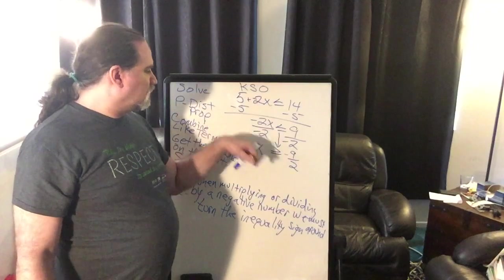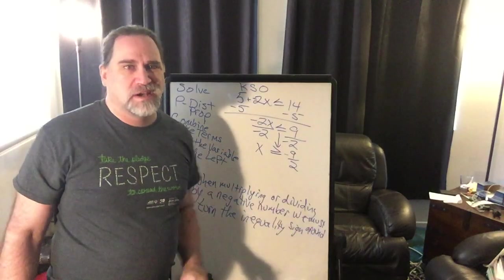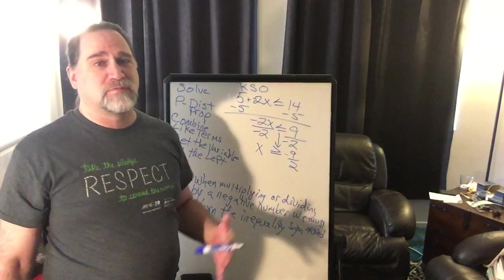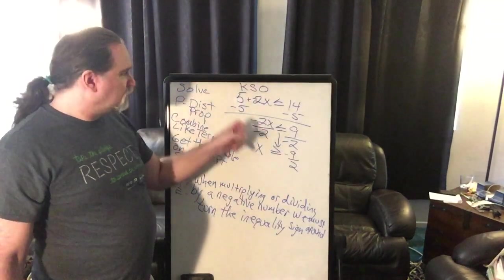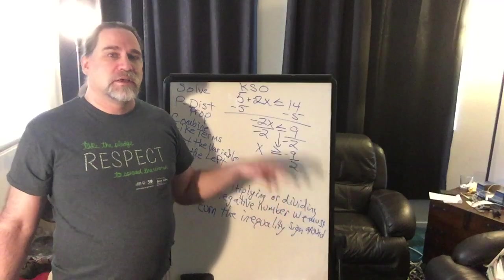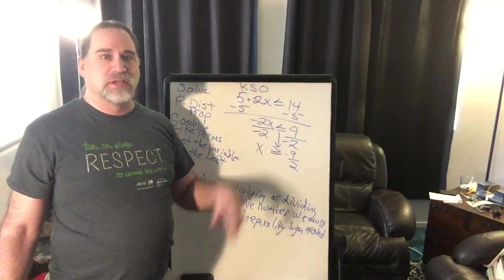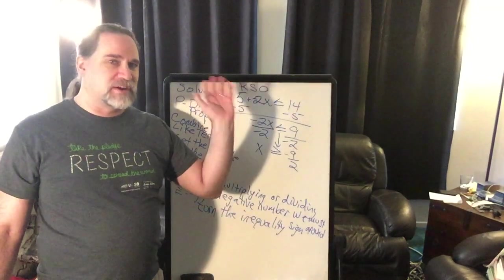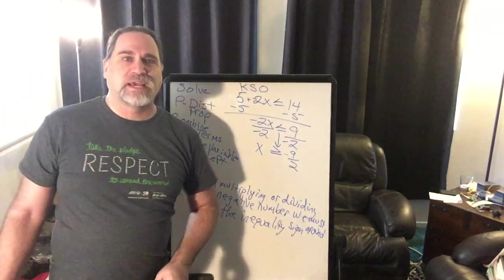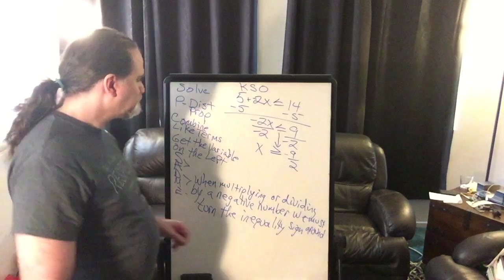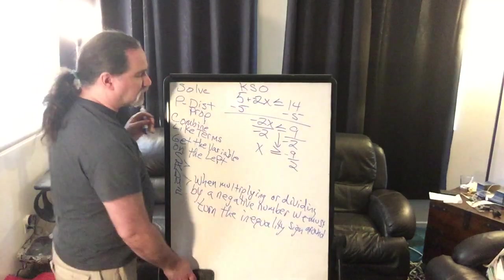Think about it: any positive number plugged into the original problem — five minus 2x — gives something less than 14. So five minus any positive number is always going to be less than 14, as long as the number is bigger than negative four and a half. That makes sense given our answer.